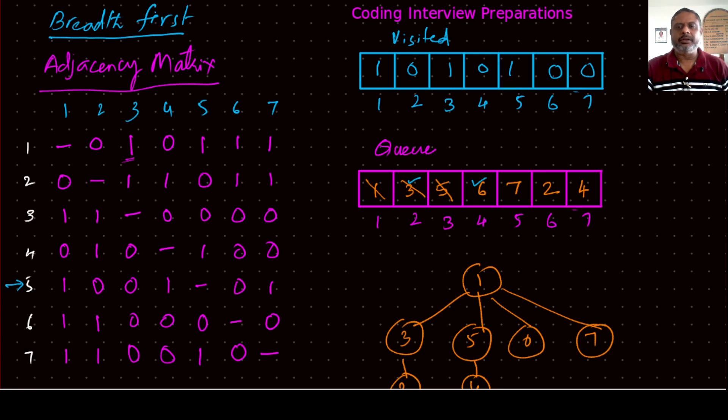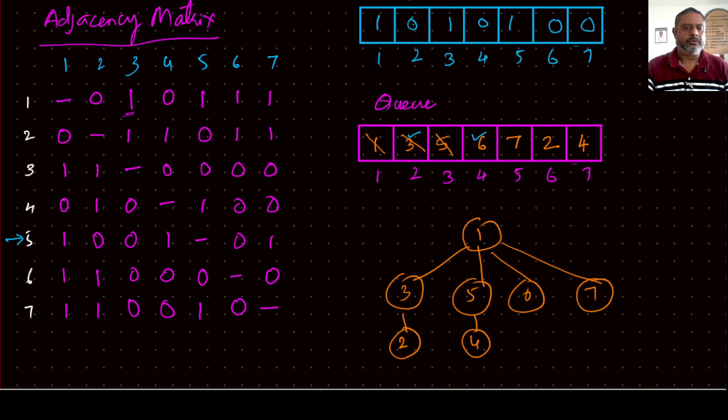So next on the queue is six, so go to row number six of the adjacency matrix. One cannot be used because it is already visited, two cannot be added because it's already on the queue, then nothing else to talk about. So work of six is over, so we declare that six also visited.